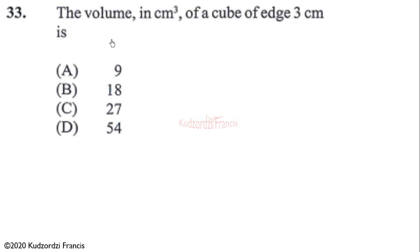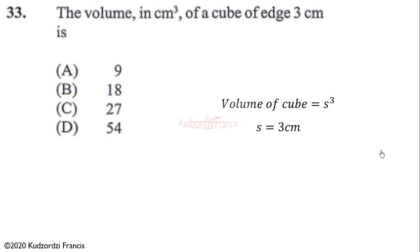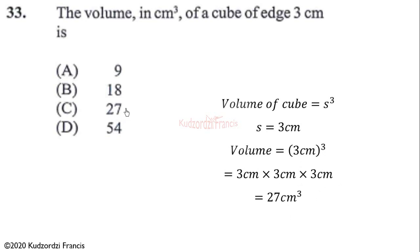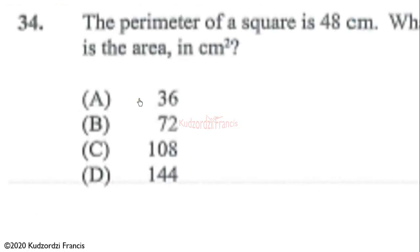Question 33: the volume in cubic centimeters of a cube of edge 3 centimeters. We know the volume of a cube is s cubed, where s is the length of the edge. We are given that the edge length is 3 centimeters, so substituting: 3 × 3 × 3 gives us 27 cubic centimeters. Therefore 27 cm³ is our answer.